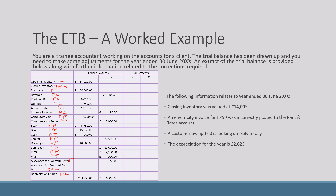Now let's look at the adjustments. First, closing inventory: we're told it's been valued at £14,005. As we've discussed, closing inventory needs both a debit and a credit adjustment. We haven't got a closing inventory on the ledger balances yet, so we need to enter it — one will appear on the statement of financial position and one on the profit and loss, which we'll cover in the next slide.